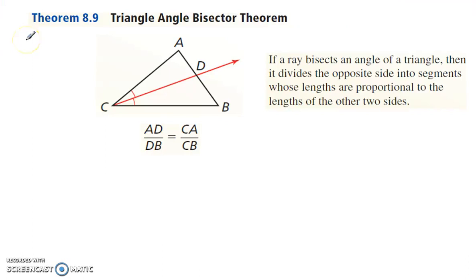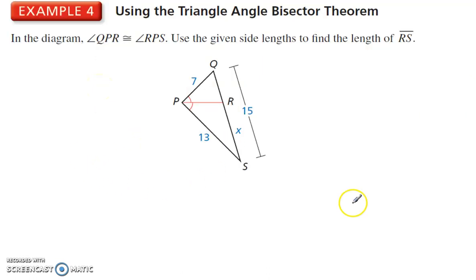The triangle angle bisector theorem, that's fun to say, triangle angle bisector. 8-9 says, if a ray bisects an angle of a triangle, then it divides the opposite side into segments, AD here and DB, whose lengths are proportional to the other side, so CA and CB. So you see here, AD to DB is like CA to CB.